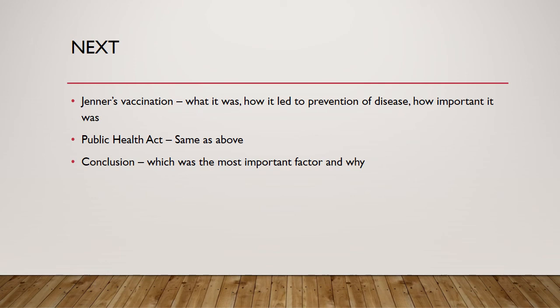For the next point I would talk about Jenner's vaccination — what it was, how it led to prevention of disease, how important it was. Then the Public Health Act — exactly the same thing. That's the bonus point. And the conclusion: which was the most important factor and why — it's a judgment you want to make. These are quite straightforward. You've just got to make sure you've got a for-and-against or agree-disagree format to it, so you can show you're going from one side to the other side.